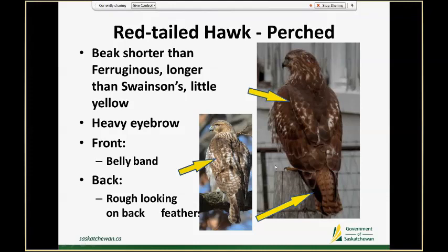We'll often see red-tails perched in trees, on power poles, and so forth, so learning to ID them from the sitting position is important. Their heads are quite different — their beaks are shorter than a Ferruginous hawk beak but longer than a Swainson's beak, and there's very little yellow on them. I actually find them kind of bluey-gray looking, and they also have a very heavy looking eyebrow.